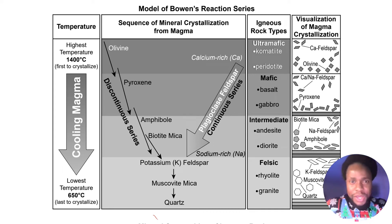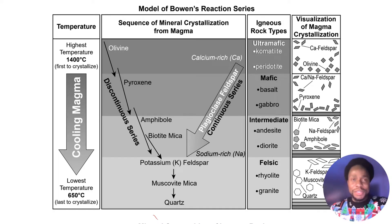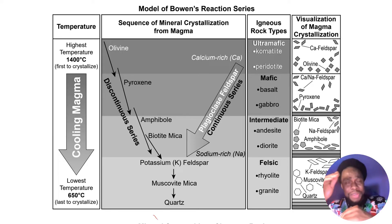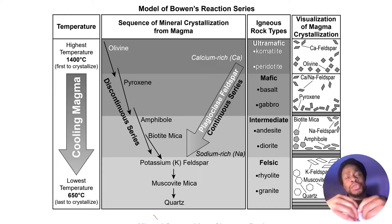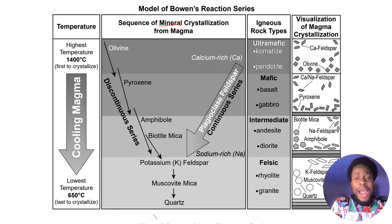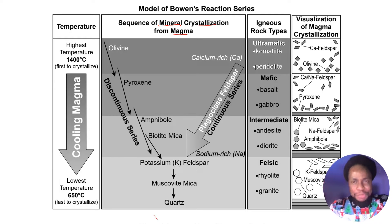Welcome to this video. Today we're going to be looking at the model of Bowen's Reaction Series, which is your ESRT page number 13, the upper part. This table is trying to explain to us how different minerals are produced in an igneous rock. As we know, igneous rocks are produced from the cooling and solidification of magma or lava, and this table explains how different minerals crystallize from magma as it cools at different temperatures.